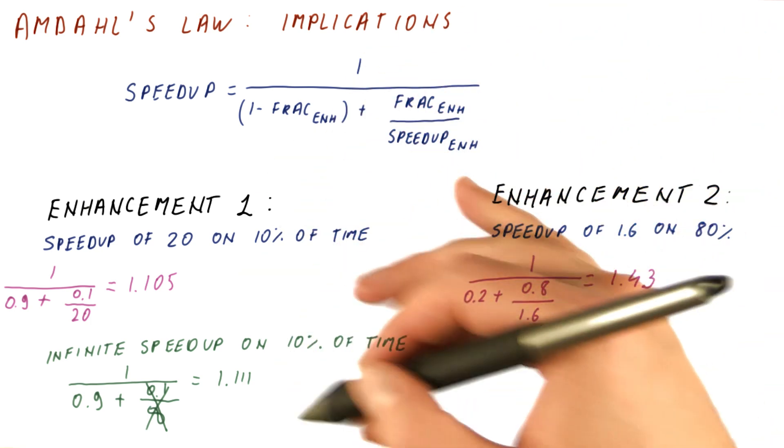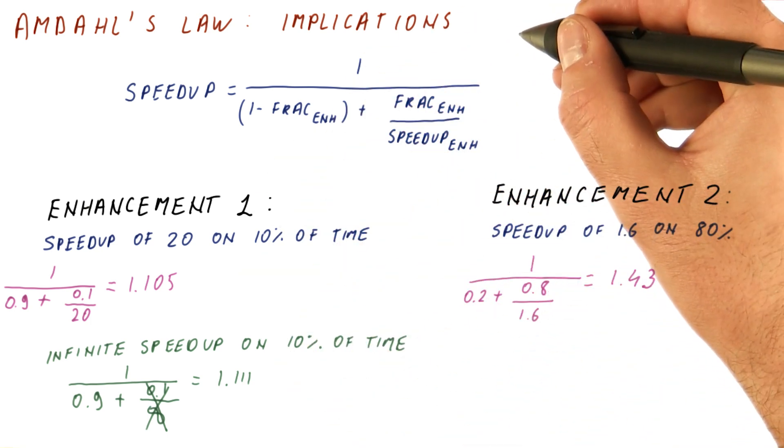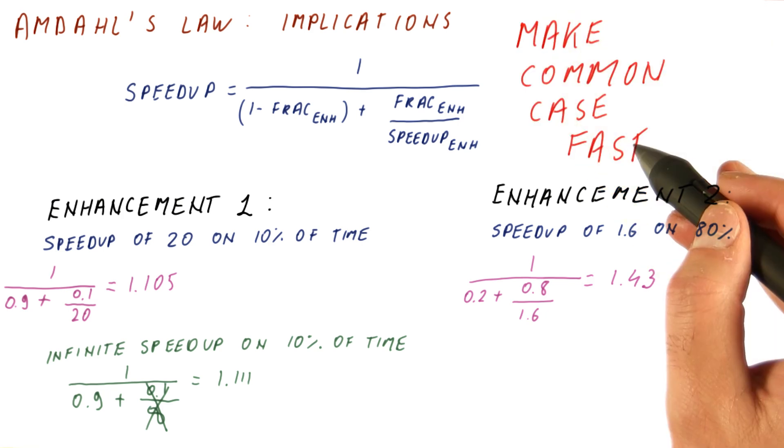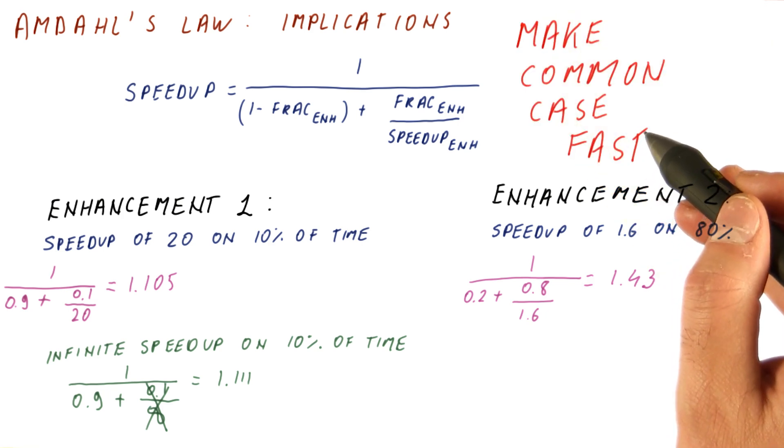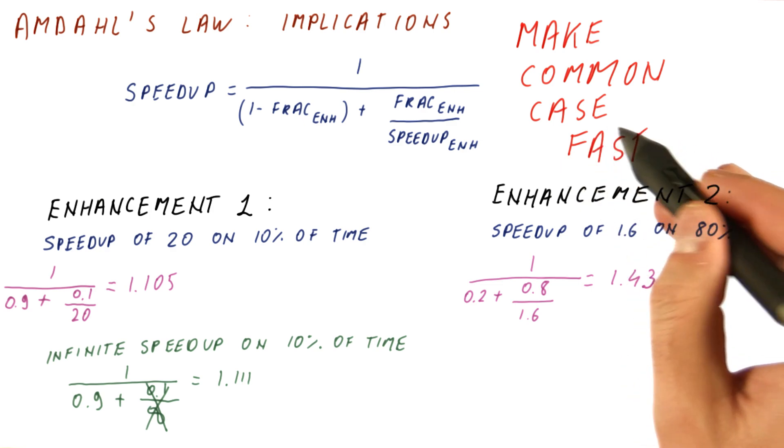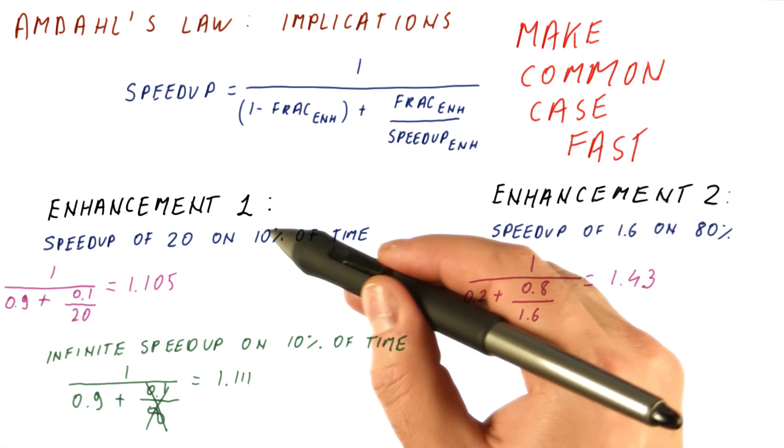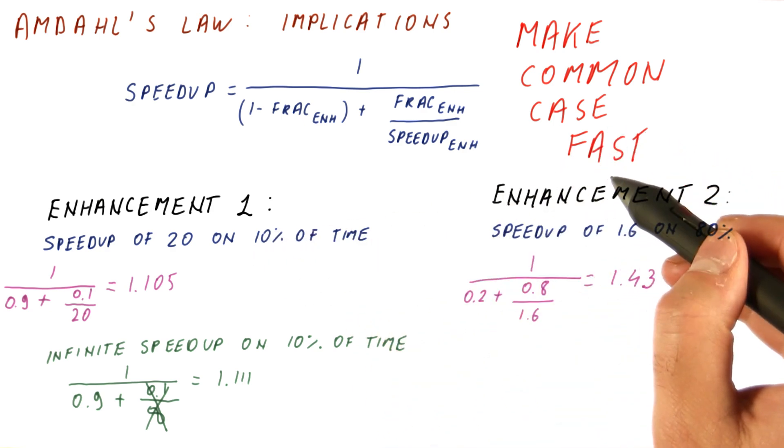So the overall conclusion from this is that Amdahl's law tells us to make the common case fast. Whatever spends the most of our execution time is what we should be trying to speed up, and we should not focus too much on stuff that consumes very little of our execution time.